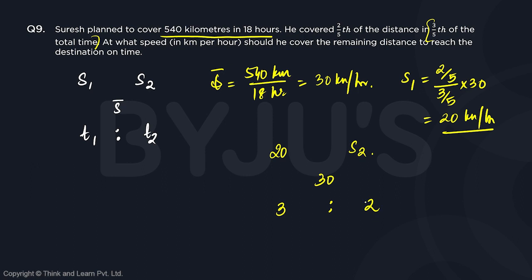Using allegation, we can see that the difference is 10. So if 2 corresponds to 10, then 3 should correspond to 15. That means the difference between S2 and 30 should be 15, just like the difference between 20 and 30 was 10 mapped to ratio 2. So S2 should be 15 more than 30, which means S2 is 45.